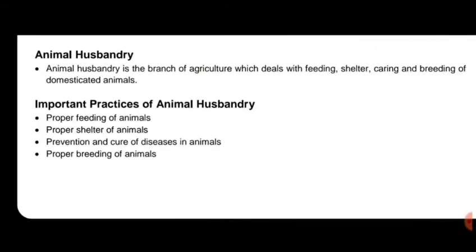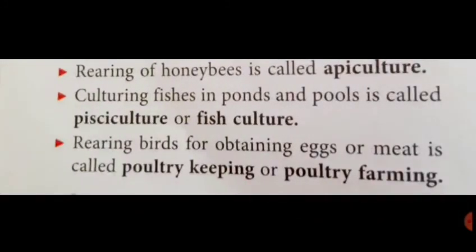Animal husbandry is the rearing of animals on a large scale for food. Cows, buffaloes, sheep, etc. are reared at farms. Important practices of animal husbandry include proper feeding, proper shelter, prevention and cure of diseases, and proper breeding of animals — all of which lead to good yield of food products.